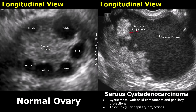Here is another case showing a serous cystadenocarcinoma. Multiple, thick, irregular papillary projections are noted inside the cystic mass. The irregular shape and the thickness indicate a malignant lesion. Low-level internal echoes are also noted.